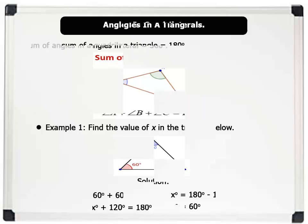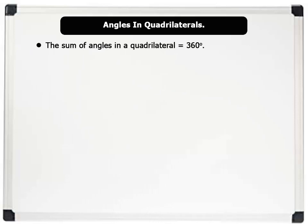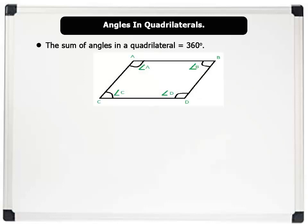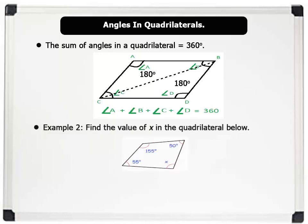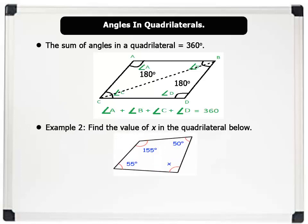Now let us see angles in quadrilaterals. The sum of angles in a quadrilateral equals 360 degrees. The quadrilateral can be split into two by a diagonal line to give two triangles, with sum of interior angles equaling 180 degrees each. Hence angles A plus B plus C plus D equals 360 degrees.